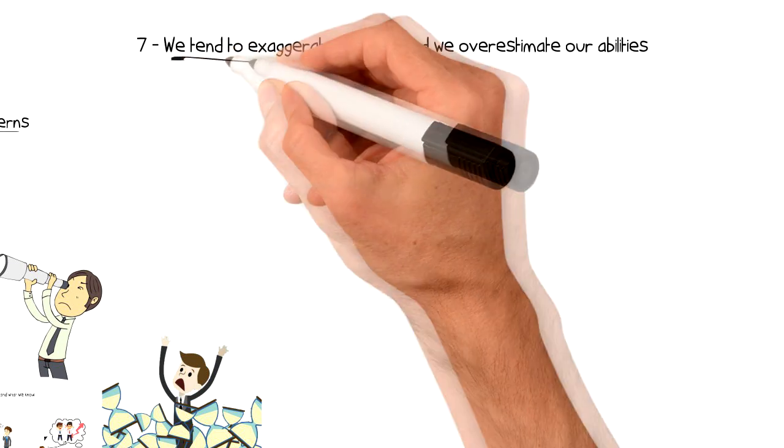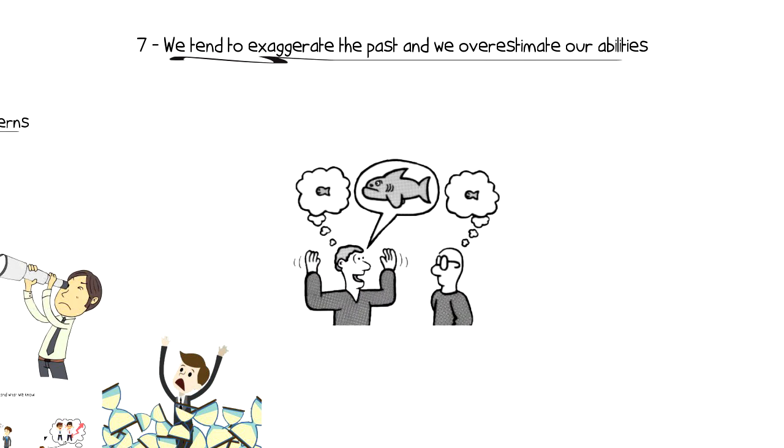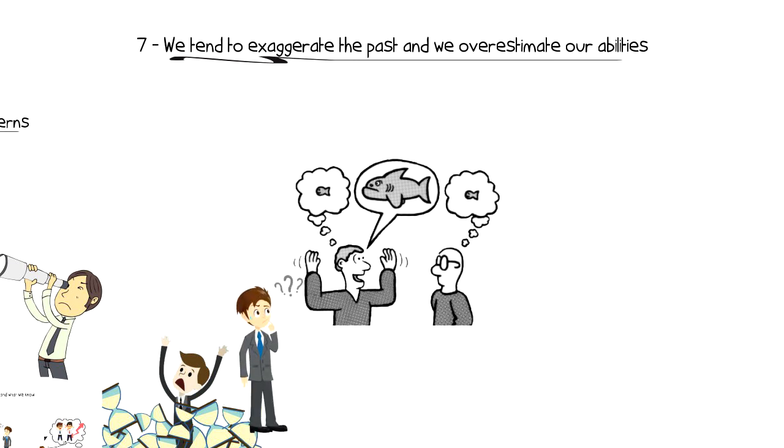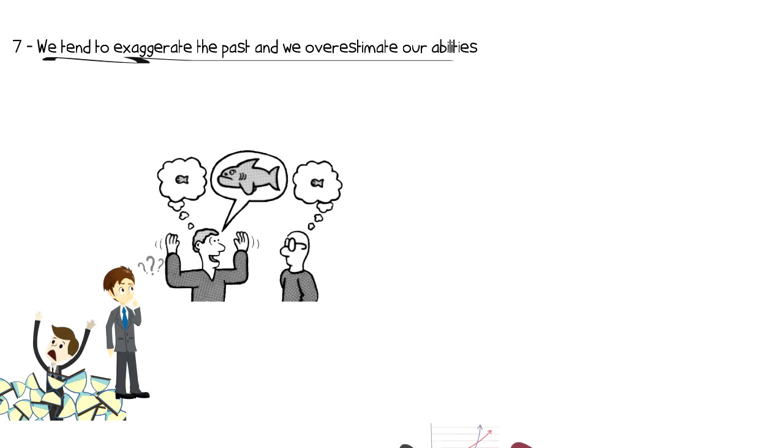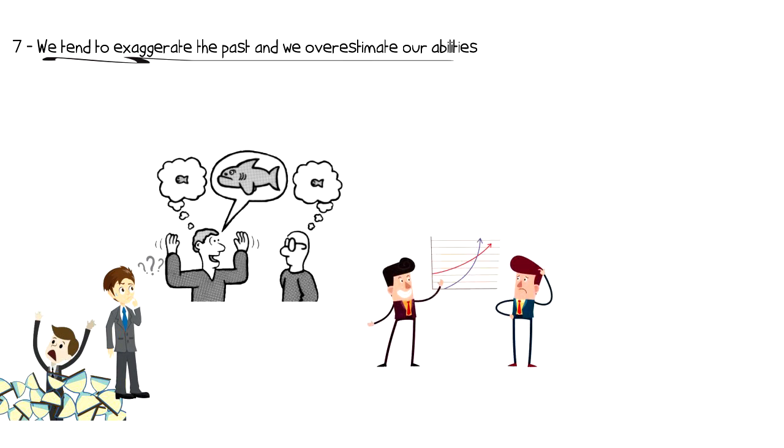Number seven, we tend to exaggerate the past and we overestimate our abilities. I think this is true for all of us. We all like to give ourselves more credit by exaggerating things or failing to remember them. If we are asked to describe our past achievements, we are likely to exaggerate them to make them look more important than they actually are.